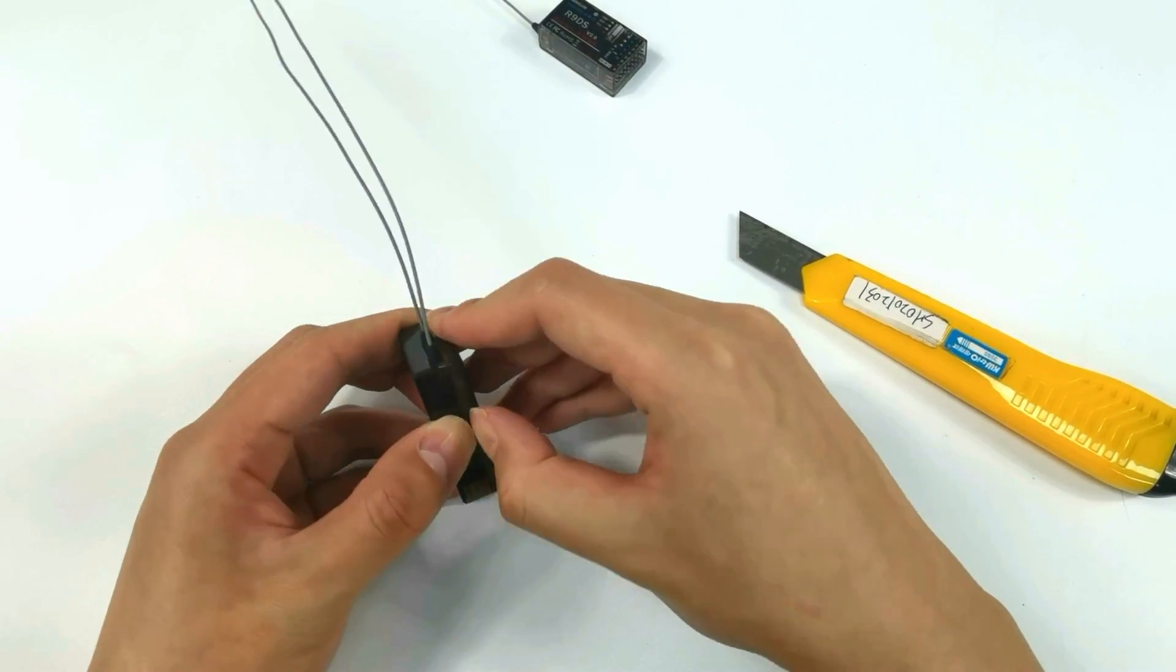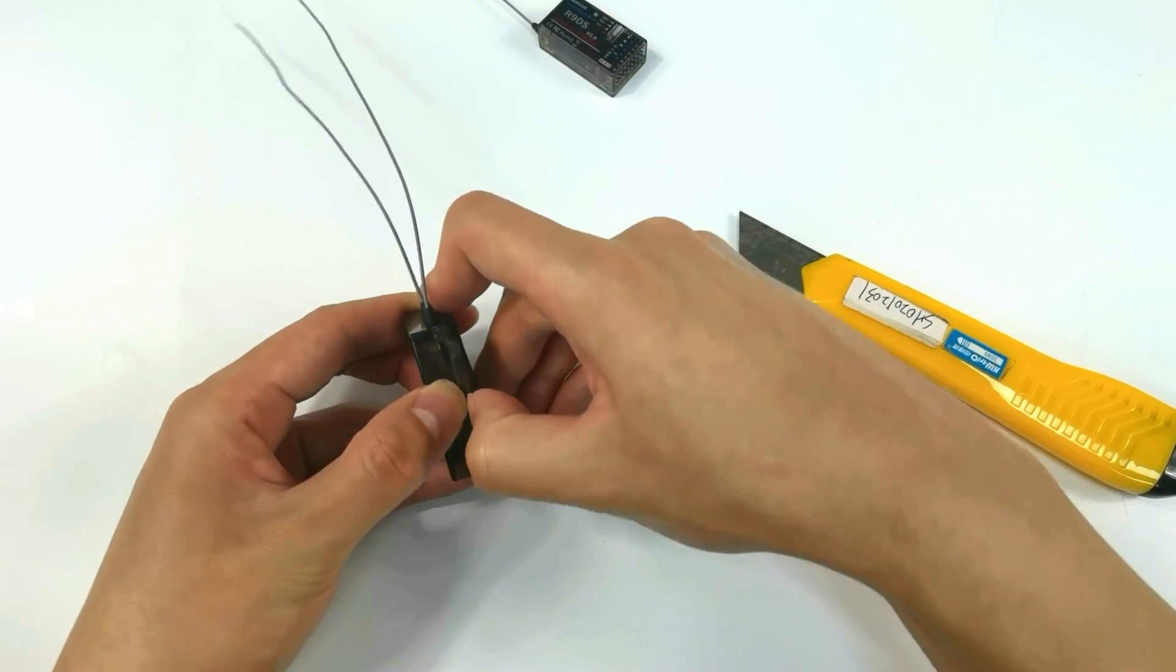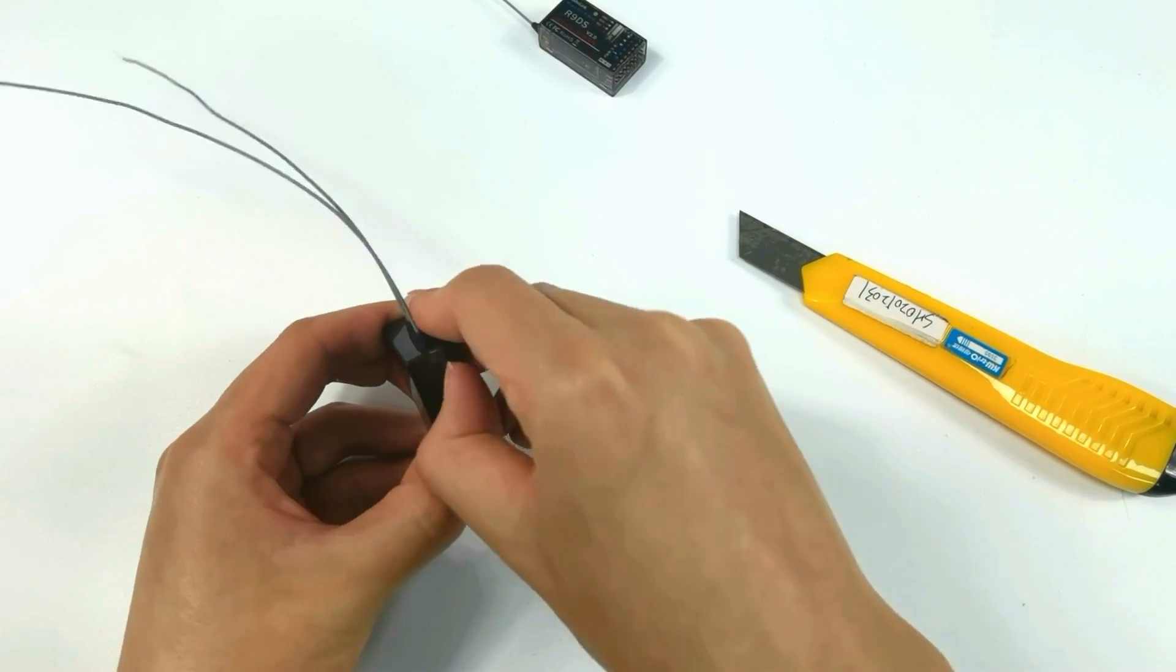Now replace the antenna of R12DS receiver. Remove the cover and take out the receiver board.